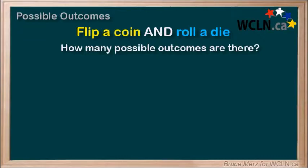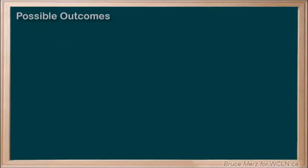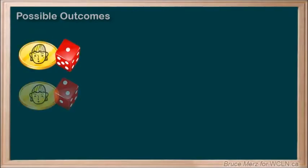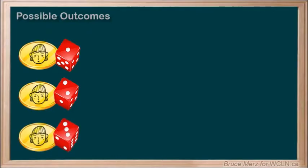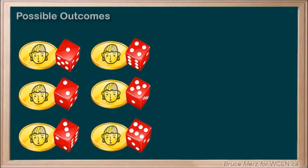For example, we could get a heads and a 1, or we could get a heads and a 2, or a heads and a 3, and so on all the way up to 6.